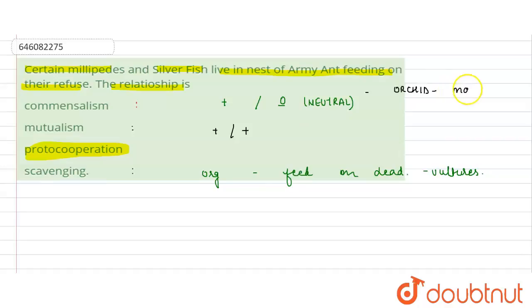The mutualism example is the fig and the wasp relationship. The fig will get pollinated, whereas the wasp will get a place to lay the eggs. This is called mutualism.